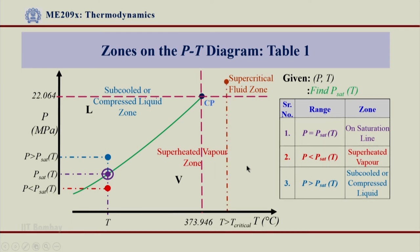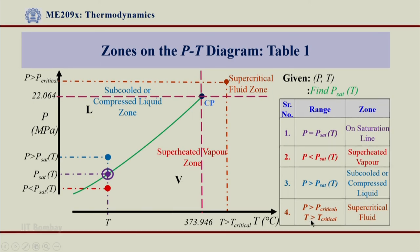The fourth case is the supercritical fluid zone. When P is greater than Pcritical and T is greater than Tcritical, the state lies in the supercritical fluid zone. For water, the temperature must be more than 373.946°C and the pressure more than 22.064 MPa. So this is the method: using Table 1, find Psat(T) for a given temperature, compare it with the given P, and come to the appropriate conclusion about which zone the given state belongs to.